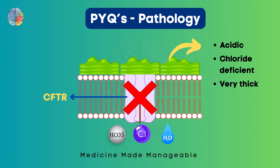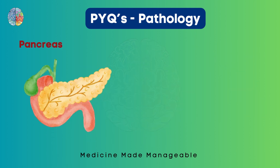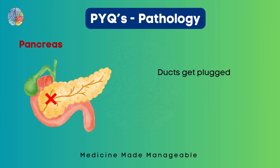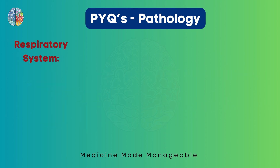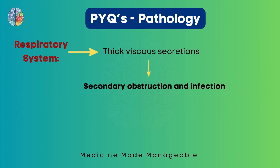So let's see the options one by one. What will happen in the pancreas? Here the ducts will get plugged because of the thick mucus, which may lead to atrophy and fibrosis. In the respiratory system, the same thing happens — because the secretions are very thick, it can cause secondary obstruction and infection.